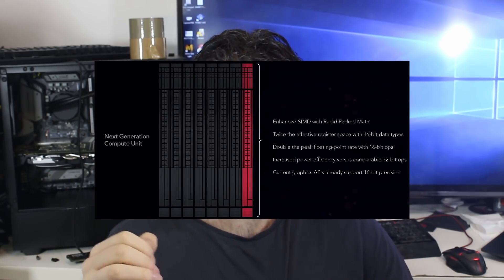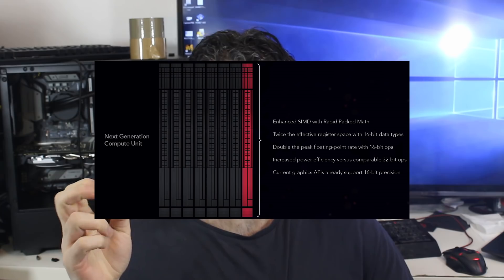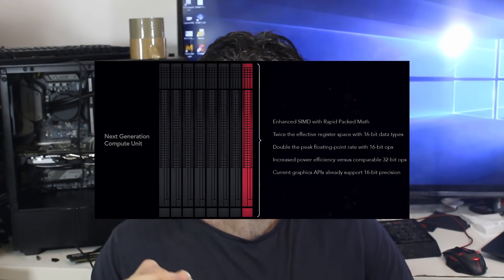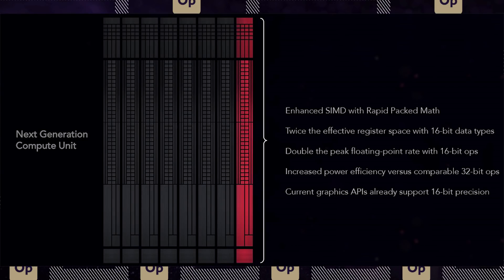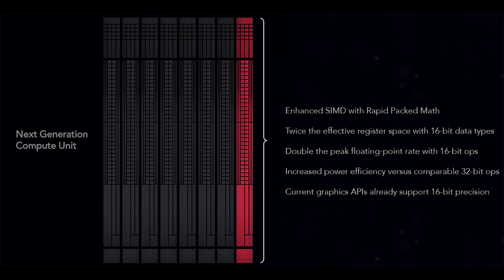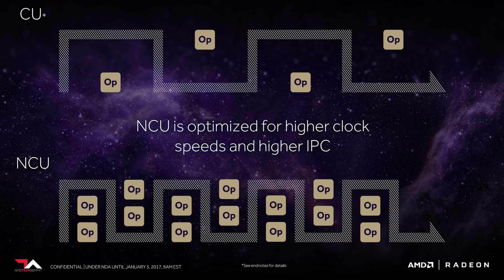Currently AMD are using the GCN architecture — technically it's NCU with Vega, but the basic principles remain consistent. With Vega 64, that refers to 64 compute units. Each of those compute units has a series of stream processors contained within it, or shaders if you prefer. You can break those ALUs down into 16 times 4. A compute unit is really the smallest building block you can actually create a GPU with, although obviously a single compute unit based GPU would not be very quick.